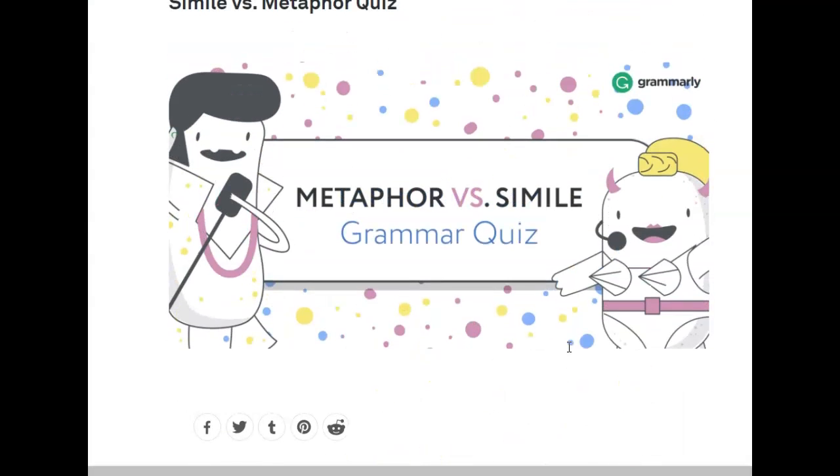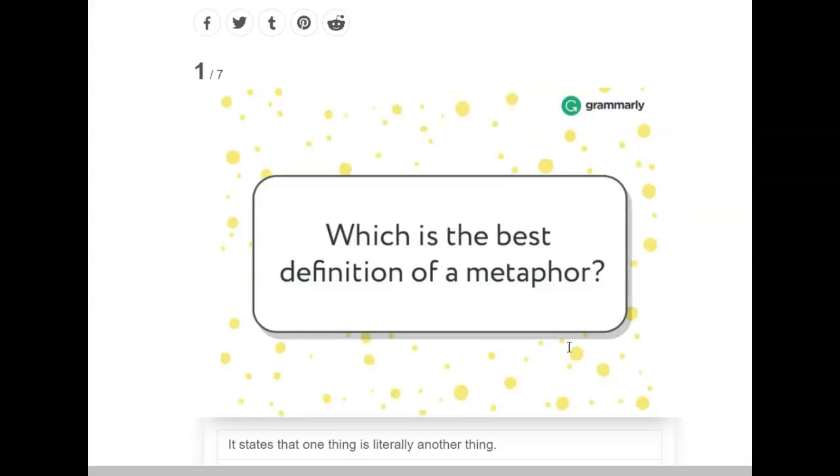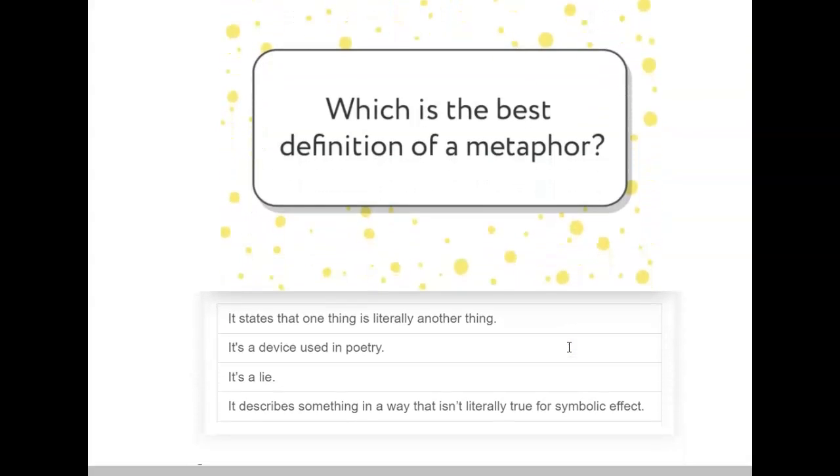Your turn. Simile versus metaphor. Ready? Listen to all of the statements here before you make your decision. Which is the best definition of a metaphor? It states that one thing is literally another thing. It's a device used in poetry. It's a lie. It describes something in a way that isn't literally true for symbolic effect. Pick the best answer.